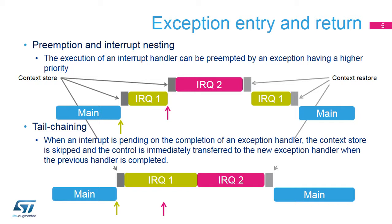When an interrupt request with lower or equal priority is raised during execution of an interrupt handler, it becomes pending. Once the current interrupt handler is finished, the context saving and restoring process is skipped and control is transferred directly to the new exception handler to decrease interrupt latency.